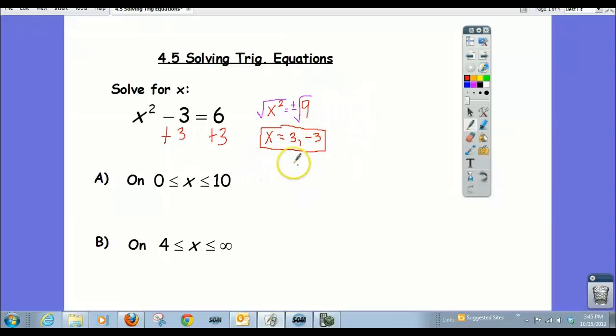So I just want to locate where those are in our number line. Here's our number line. And our answers are negative 3 and 3.